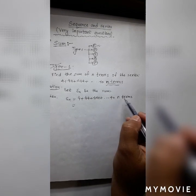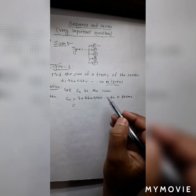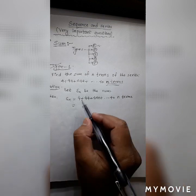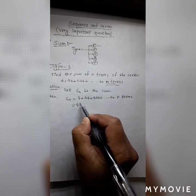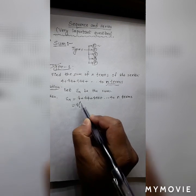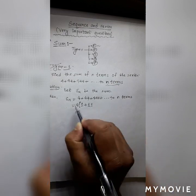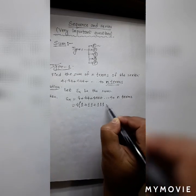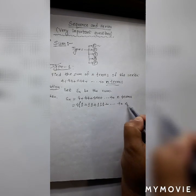We have to convert all the numbers into ones. How do we convert all these terms? By taking 4 as common. So if we take 4 common, then this becomes 1, 11, 111, 1111, and so on up to n terms.